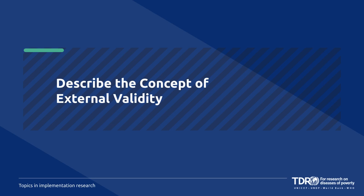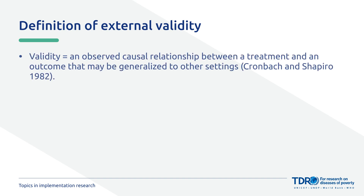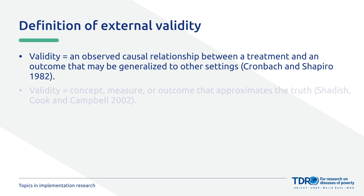This chapter is all about understanding external validity and why it's so important in implementation research. Let's start by describing what external validity is and how it relates to implementation research. Validity refers to the extent to which a concept, measure, or outcome is true and accurate.